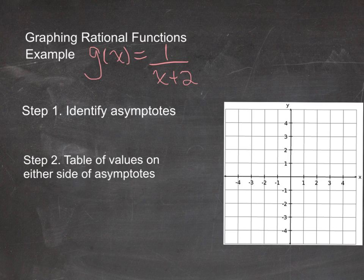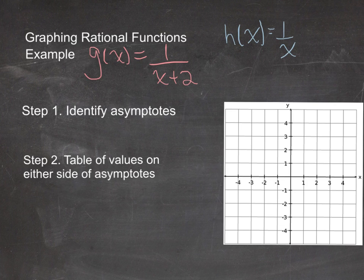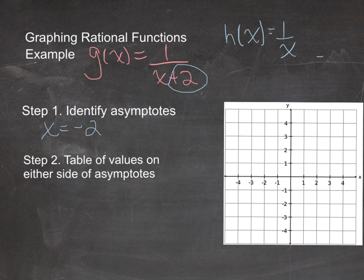The first example is a basic transformation of the parent graph 1/x. Let h(x) = 1/x be the parent function. In g(x) = 1/(x + 2), the '+2' in the denominator translates the parent function 2 units to the left. So the vertical asymptote shifts to x = −2, and the horizontal asymptote remains at y = 0 since the numerator is still a constant 1.